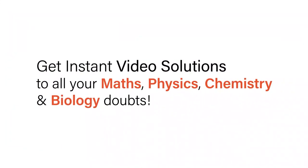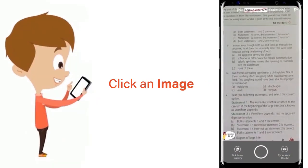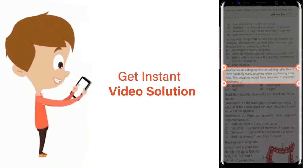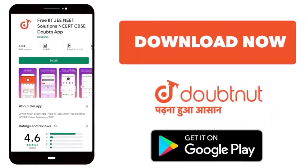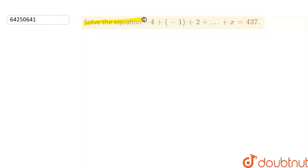With Doubtnet, get instant video solutions to all your maths, physics, chemistry, and biology doubts. Just click the image of the question, crop it, and get instant video solution. Download Doubtnet app today. Solve the equation: -4 + (-1) + 2 + ... up to x, whose sum equals 437.